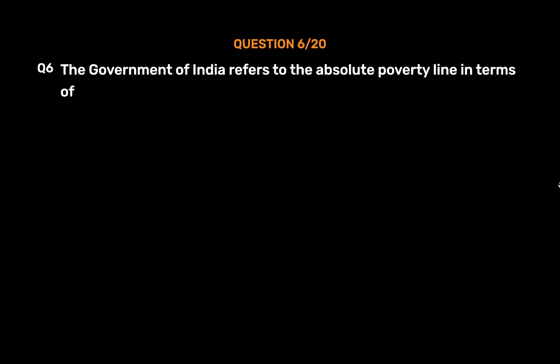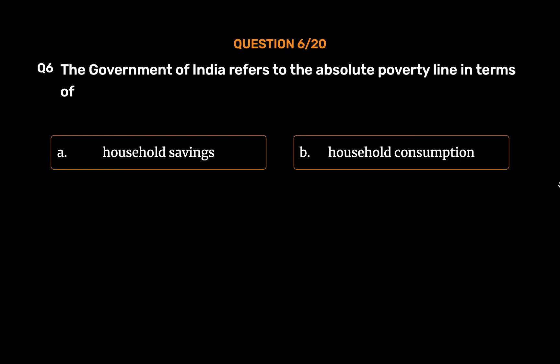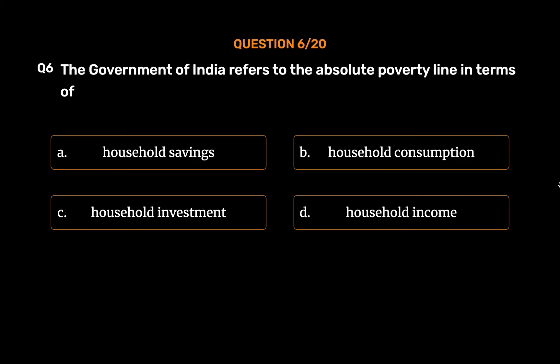Question No. 6: The Government of India refers to the absolute poverty line in terms of: Option A, Household savings; Option B, Household consumption; Option C, Household investment; Option D, Household income. The correct answer is Option B, Household consumption.